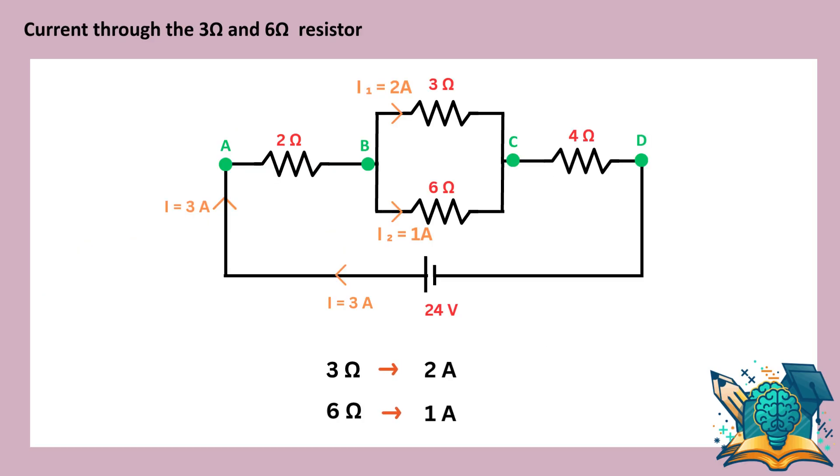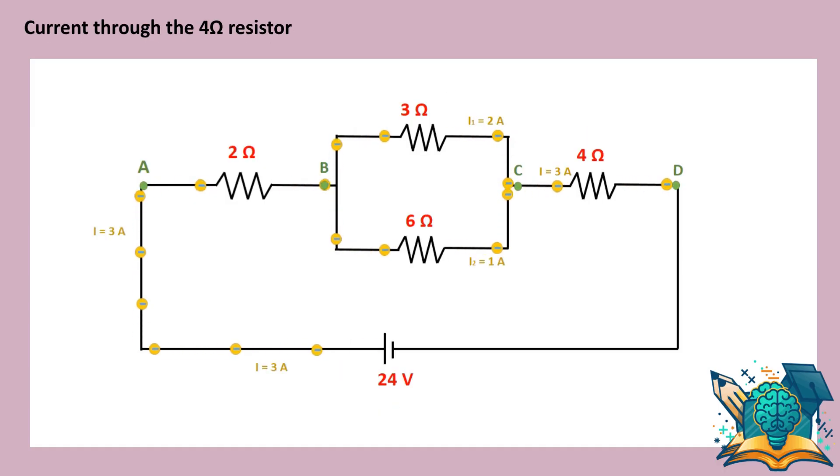So, 2 amperes flow through the 3 ohm resistor, and 1 ampere flows through the 6 ohm resistor. Now, after the currents I1 and I2 join at point C, they combine back into a single current of 3 amperes.